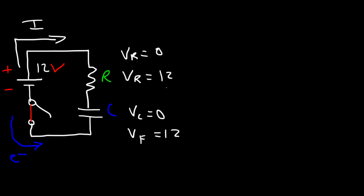Initially when the capacitor has a voltage of zero, the voltage of the resistor will be 12, because they have to add up to the battery's voltage. When the capacitor is fully charged to 12 volts, the voltage across the resistor will be zero.